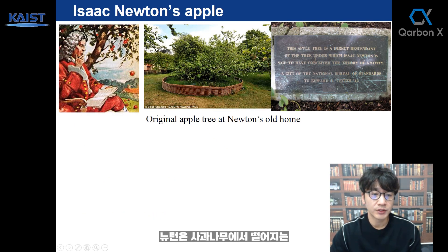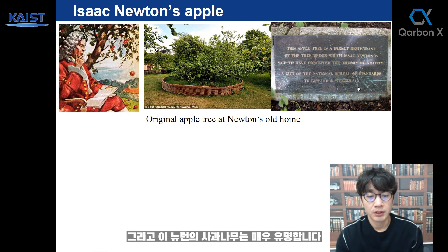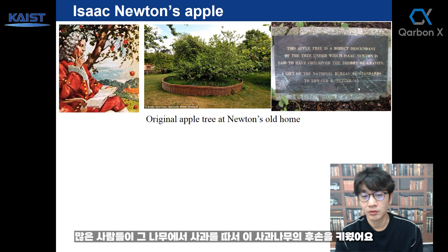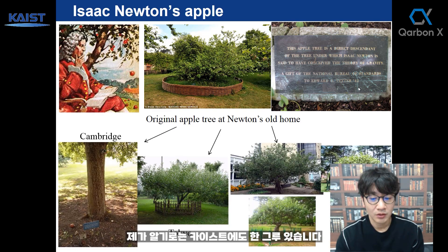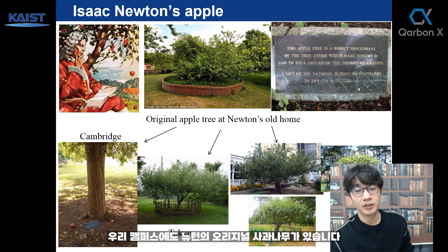People say that Newton found this gravitation law by looking at falling apples from an apple tree. Newton's apple tree is very famous. There's an original apple tree in Newton's old home, and many people took the apples from that tree and grew descendants of the original apple tree. We also have one at KAIST — a descendant of Newton's original apple tree in our campus.